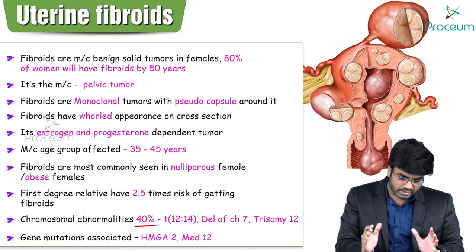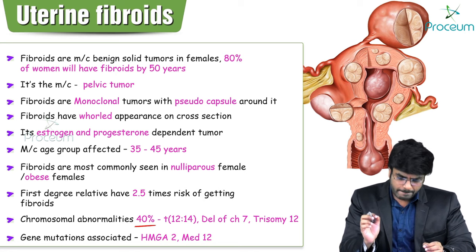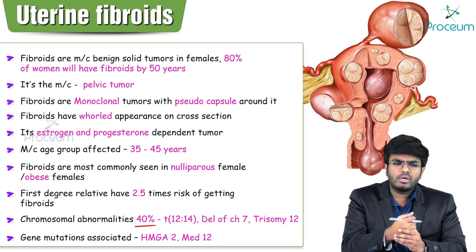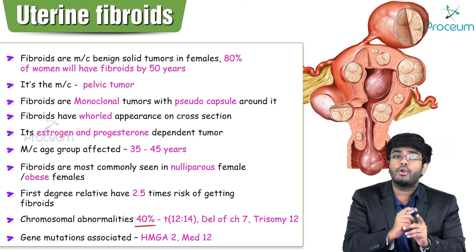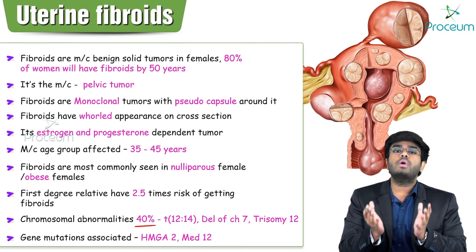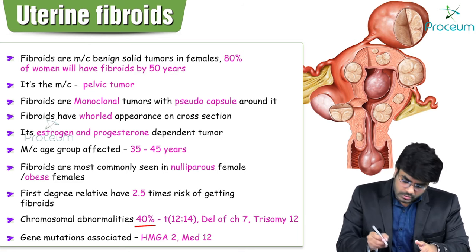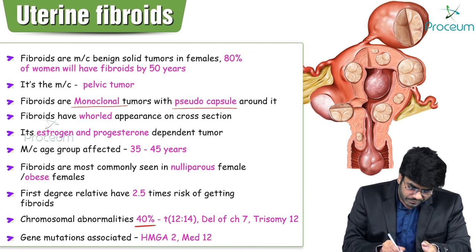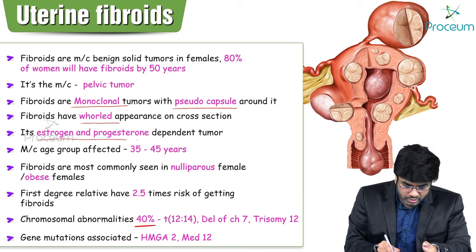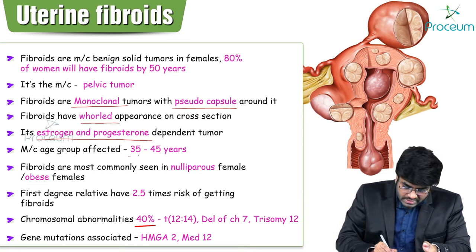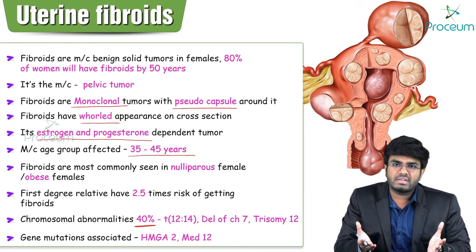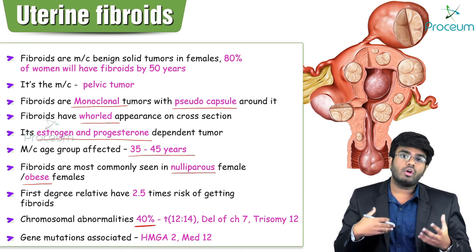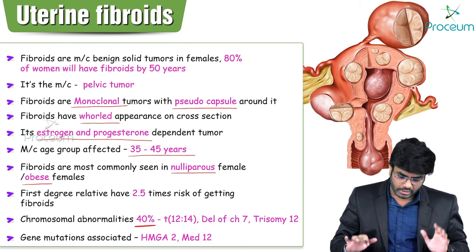Important point: if someone asks whether fibroid is a capsulated tumor, the answer is no — it has a pseudo capsule, not a true capsule, so we shouldn't call it capsulated. It is monoclonal in nature, shows whorl appearance on cross section, is both progesterone and estrogen dependent, most commonly seen at 35–45 years, and nulliparity is a risk factor. It's most commonly seen in obese females due to their high estrogen levels.